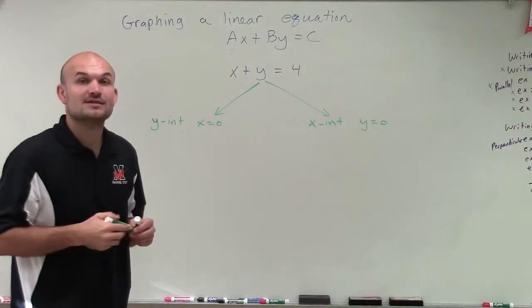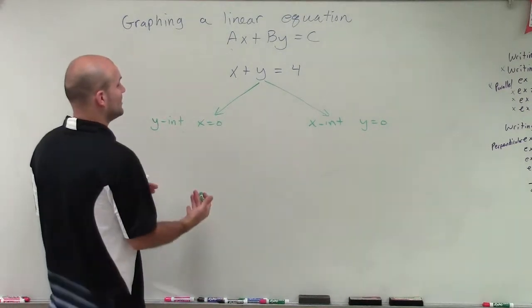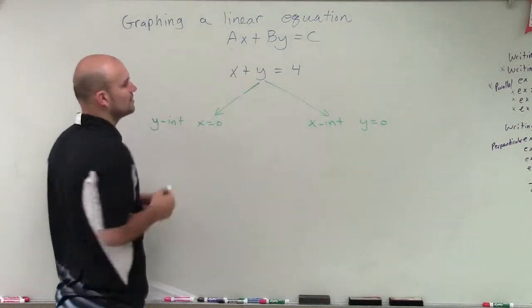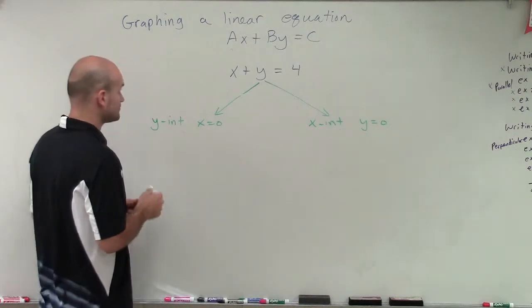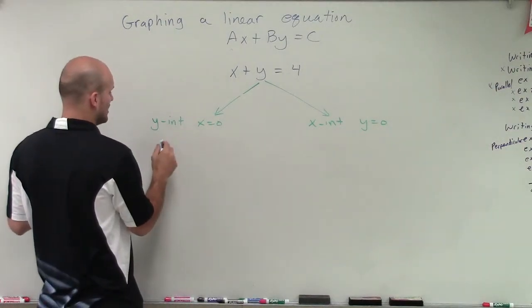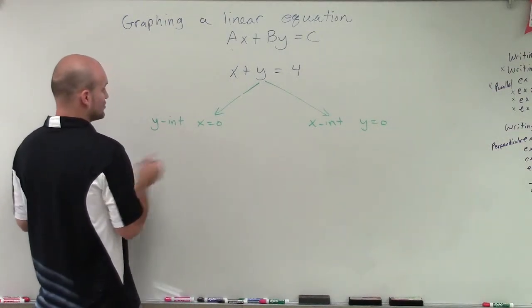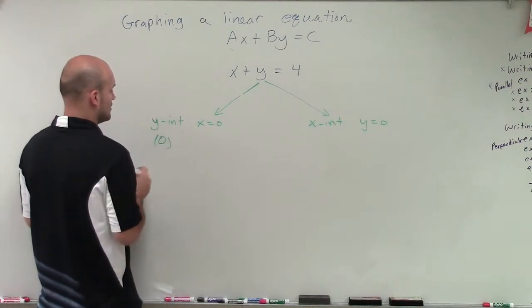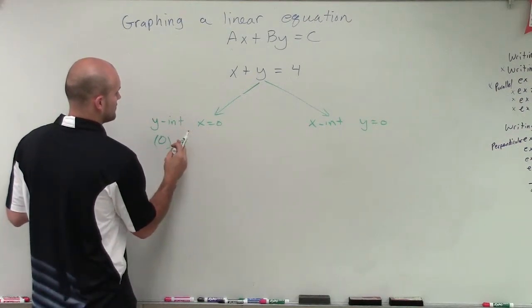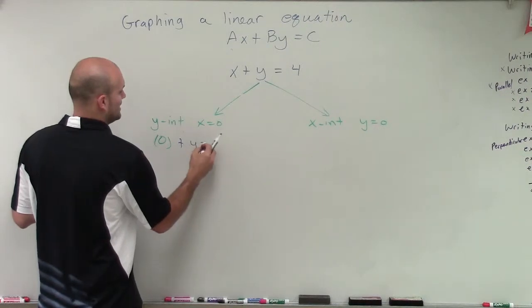Now I'm going to plug in those values for 0 for both of these variables. So if x equals 0, I'll have 0 plus y equals 4.